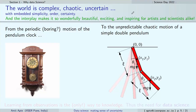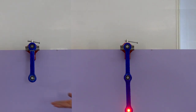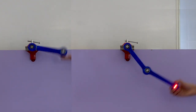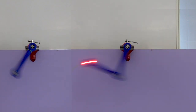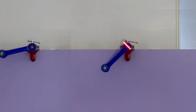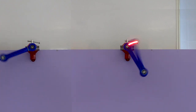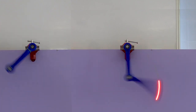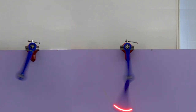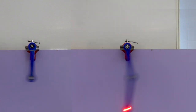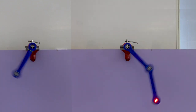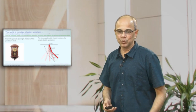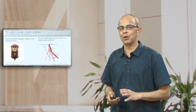Even something as simple as a pendulum, which we know moves back and forth — a simple, perhaps boring motion — if you just attach a small thing to it and make it into what is called a double pendulum, then it shows quite complicated, chaotic motion. Chaos here means irregular motion, even for a simple system of essentially two sticks hanging from each other. That is one example of a simple-looking system that is still chaotic.